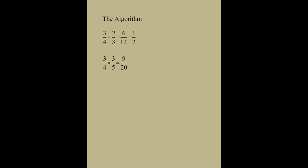Let's first talk about the algorithm that most of us are familiar with. Even a fifth grader would know how to multiply 3 fourths by 2 thirds. You take the two numerators — 3 and 2 — and multiply them to get 6. Then you take the two denominators — 4 and 3 — multiply them to get 12. And 6 twelfths is the same as 1 half.